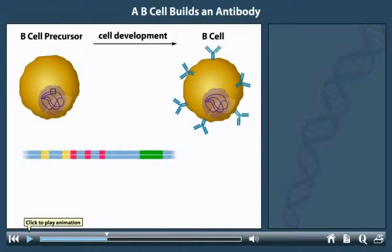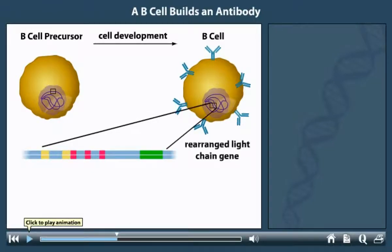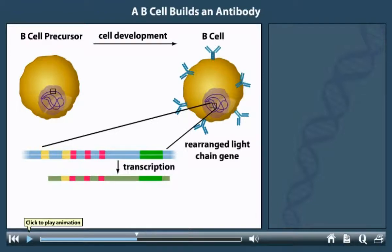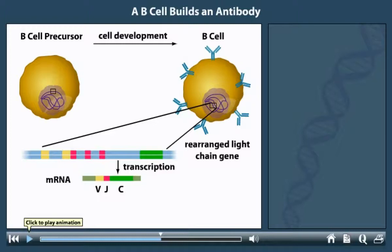As the immunoglobulin, or Ig, genes rearrange, the B cell matures and the Ig genes are expressed. Note that the light chain gene still contains intervening DNA between the V, J segment and a constant segment. These intervening sequences are left in the DNA but spliced out from RNA after the gene is transcribed. The mRNA is translated into the Ig light chain.